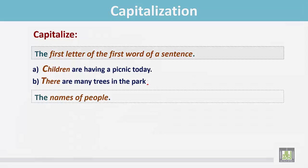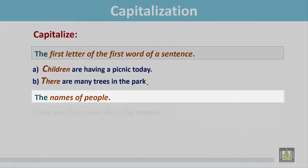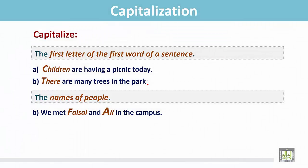The names of people. We met Faisal and Ali on the campus. There are two names, Faisal and Ali, and in both names the first letters F and A are capital.